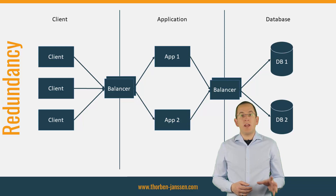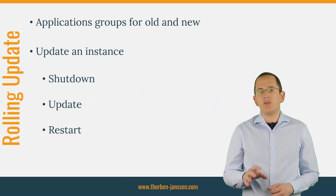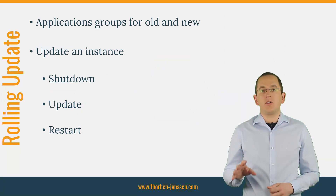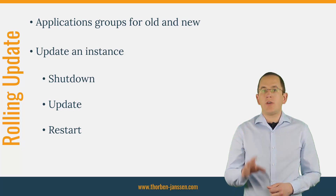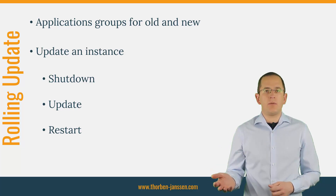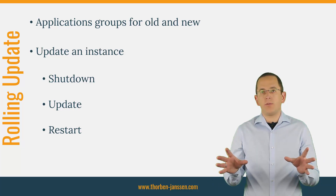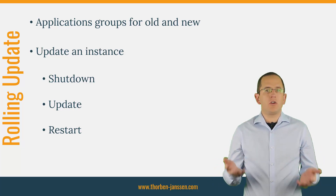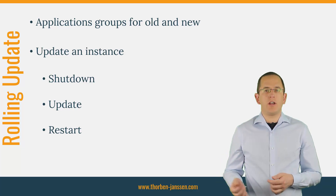The redundancy of the application plays a critical role during the migration. It enables you to perform a rolling update. The implementation of a rolling update depends on your technology stack, but the idea is always the same. You have a bunch of instances of a subsystem, and you shut down, update, and restart one instance after the other. By doing that, you run the old and the new version of your application in parallel. The Kubernetes documentation contains a nice visual description of the rolling update concept.